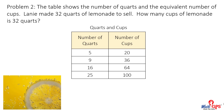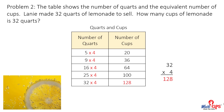Problem 2: The table shows the number of quarts and the equivalent number of cups. Laney made 32 quarts of lemonade to sell. How many cups of lemonade is 32 quarts? Look at the table. What is the process? Multiply by 4. What is 32 times 4? 32 times 4 equals 128. Laney made 128 cups of lemonade.